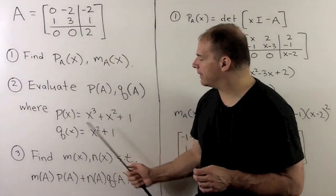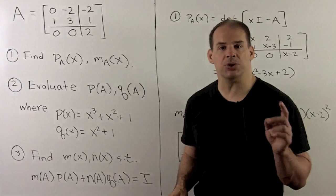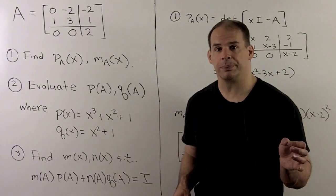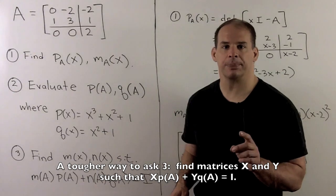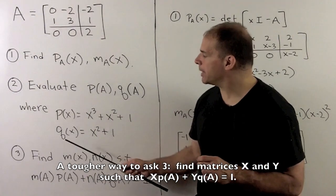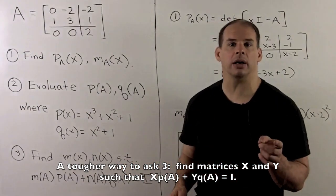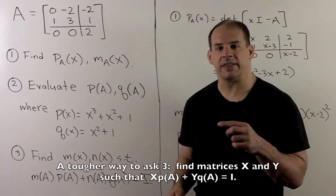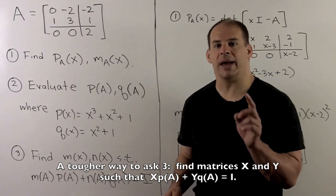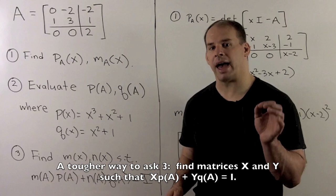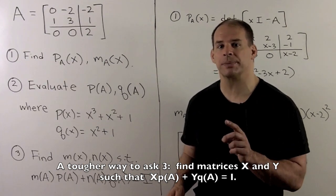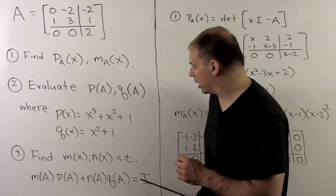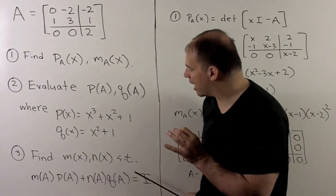Because P and Q have no common factors, we can apply Bezout's identity for polynomials. That says there exist polynomials M of X and N of X such that M times P plus N times Q is equal to one. If I take that equation and turn it into a matrix equation by replacing X with A and the constants with constants times the identity matrix, I have the following equation here. So this is what we're trying to solve.